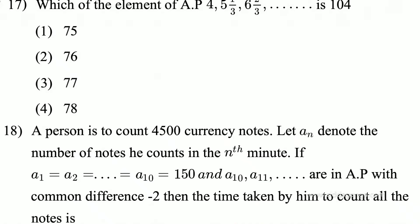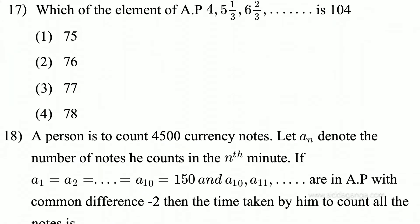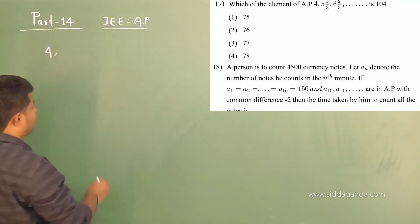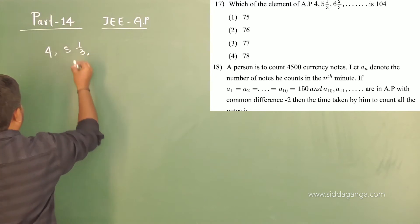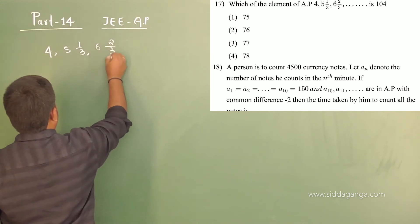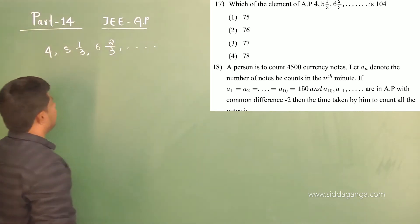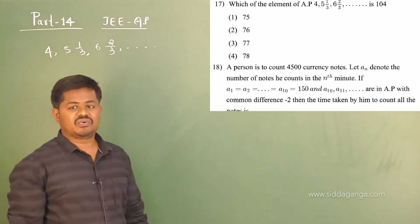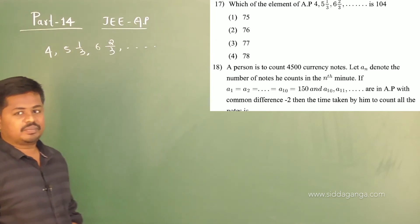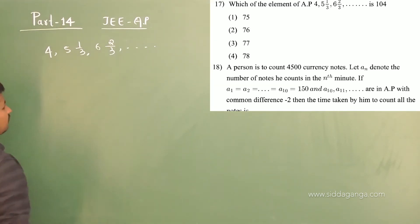Let us move to question number 17: which element of the AP 4, 5 and 1/3, 6 and 2/3, and so on is 104? Here we have an AP. The first term is 4, the second term is 5 and 1/3, and the third term is 6 and 2/3, and so on. We have to find which term of this sequence is 104.